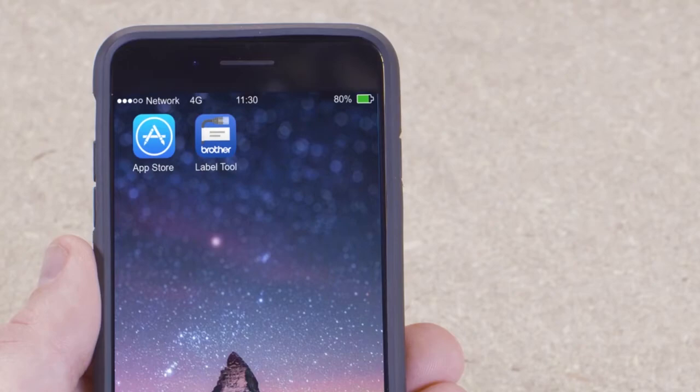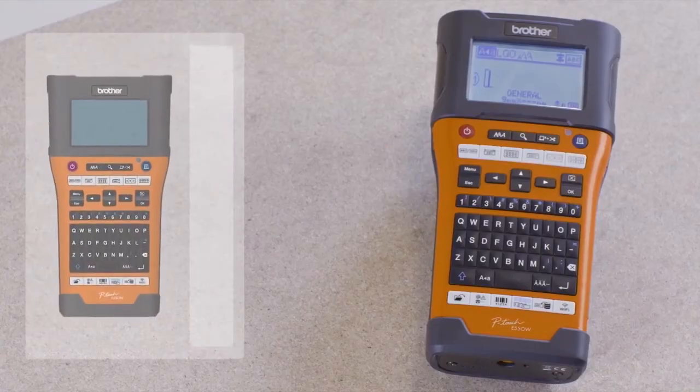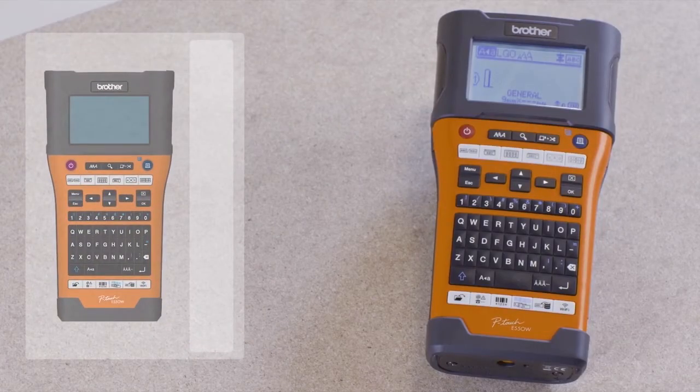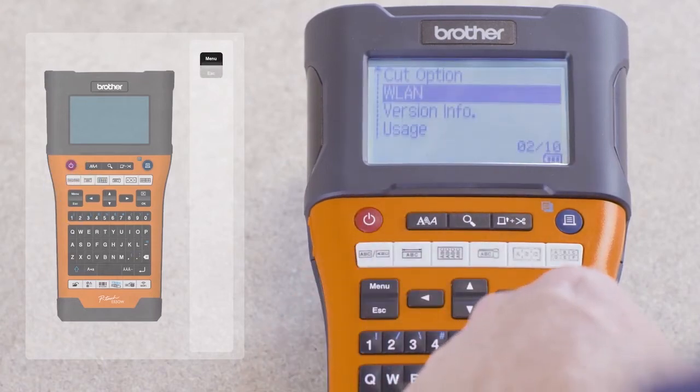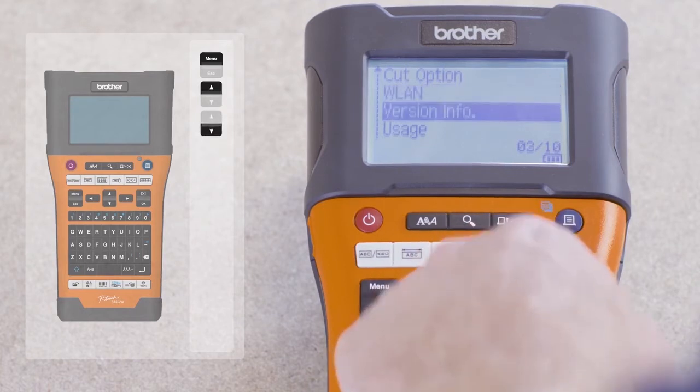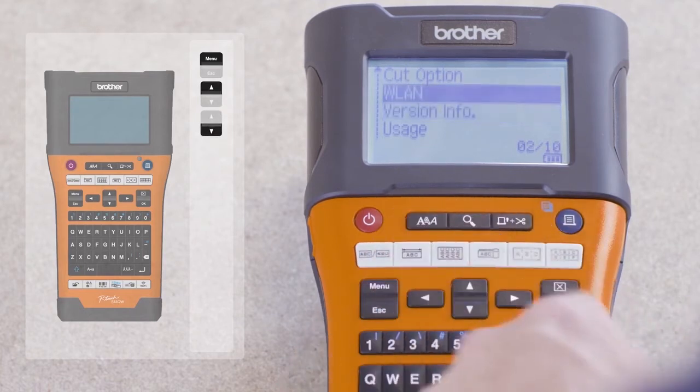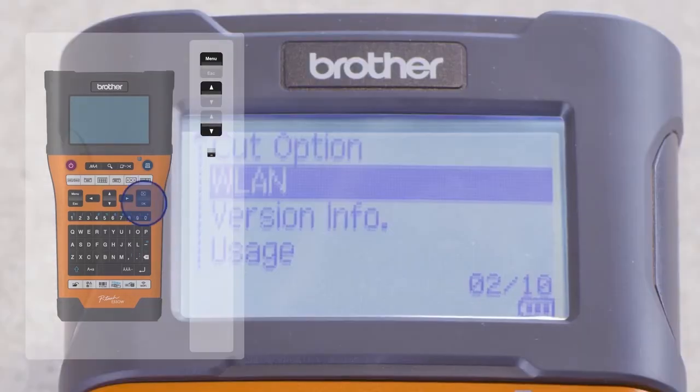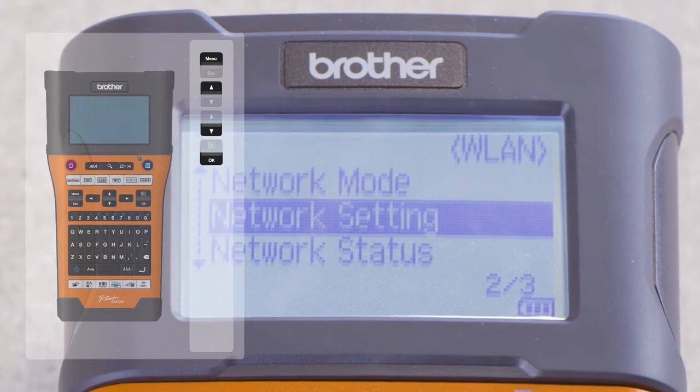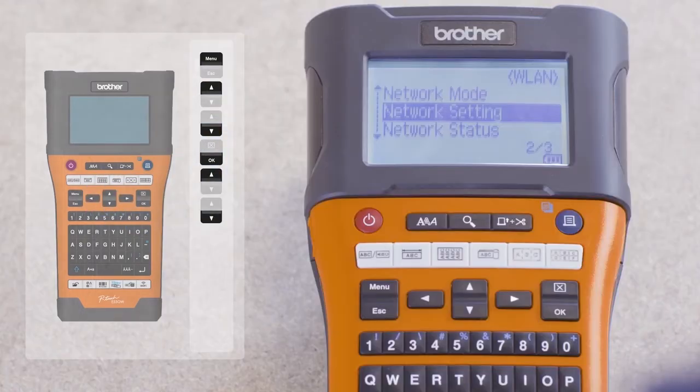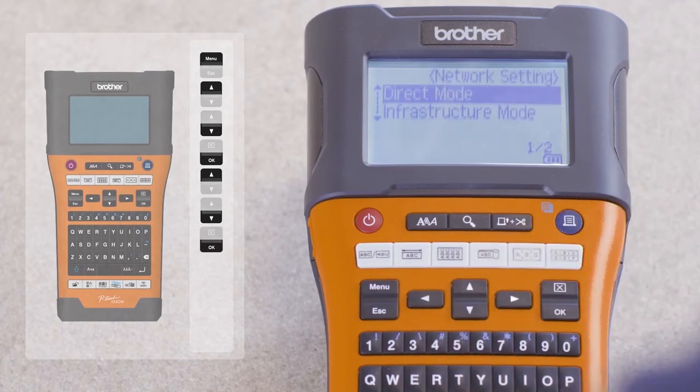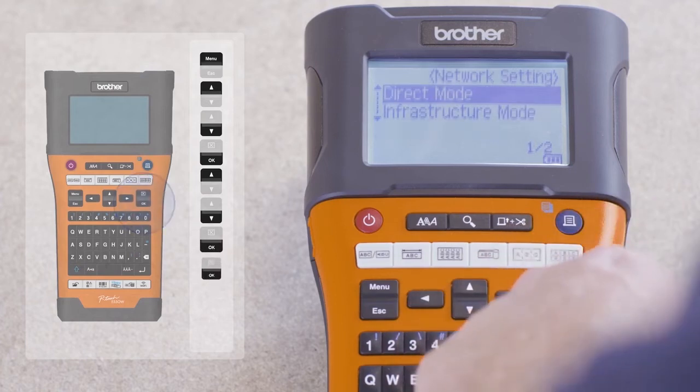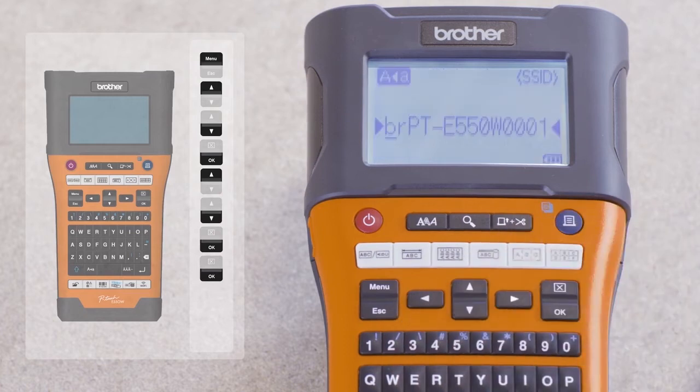Now let's set up the printer. Press the Menu key on the printer and use the up-down arrow keys to scroll to the Wireless LAN option. Click OK and scroll to the Network Settings option. Click OK and select the Direct Mode option. Click OK to see the printer name. Click OK to view the Wi-Fi password.